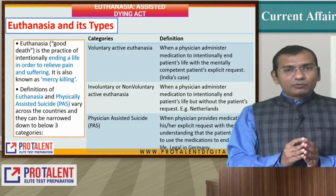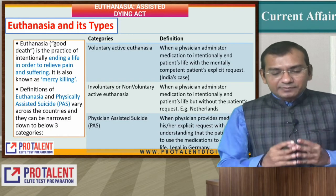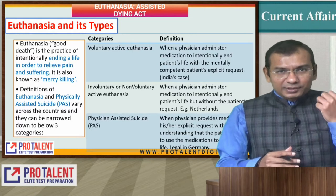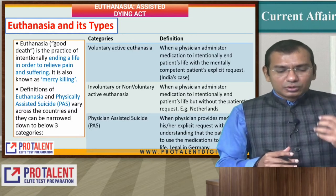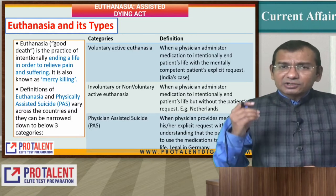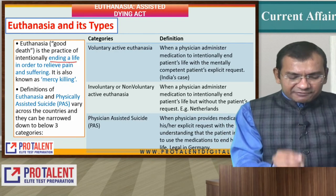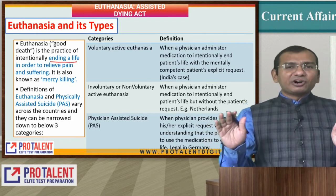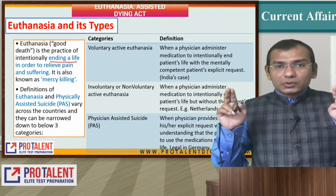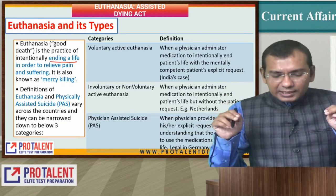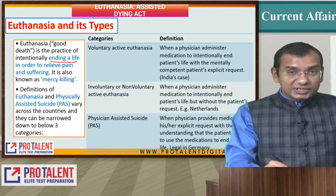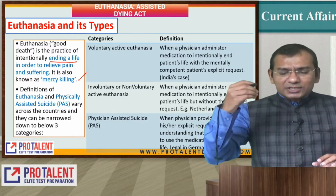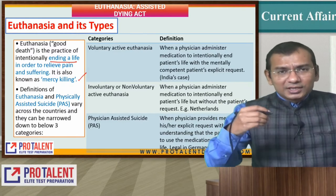Now, what is euthanasia and what are the various types? Euthanasia, as we discussed, means good death. It is a practice of intentionally ending life in order to relieve all kinds of pain, and is also known as mercy killing. Let us talk about the categories: one is Voluntary Active Euthanasia, another is Involuntary Active Euthanasia, and another is Physician Assisted Suicide.